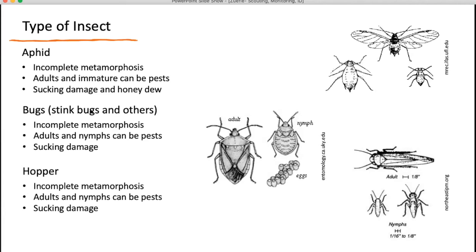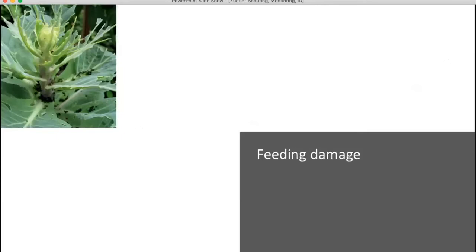The last group — aphids, bugs including stink bugs, and hoppers — all have incomplete metamorphosis, so the immatures look very similar to the adults. All stages can be a pest, and they have piercing-sucking mouthparts causing sucking damage to the host crop. One easy way to distinguish aphids is they have cornicles — projections on their abdomen, sometimes called tailpipes. They also secrete honeydew, so if you think you might have aphid damage, look for a sticky substance on the leaf; there might be aphids above secreting honeydew.